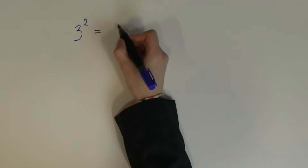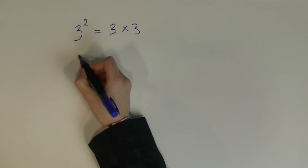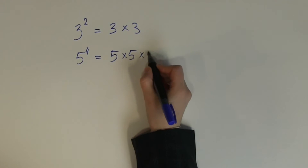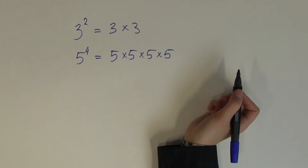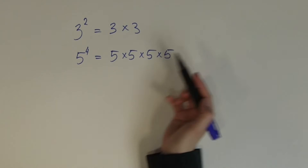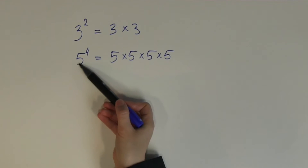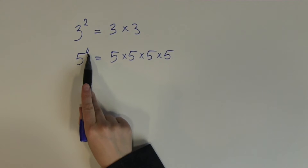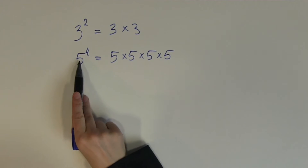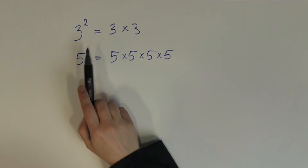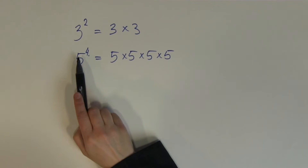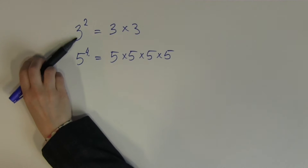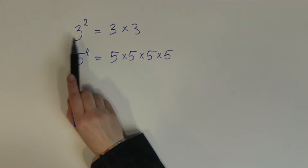3 to the power of 2 is 3 times 3, and 5 to the power of 4 is 5 times 5 times 5 times 5. So there are two important concepts here: the power and the base. They can both be any different whole numbers. The power tells us how many times we need to multiply the base together. So in the case of 5 to the 4, the 4 tells me to multiply the base 5 by itself 4 times, and the 2 in 3 to the 2 tells me to multiply 3 by itself twice.